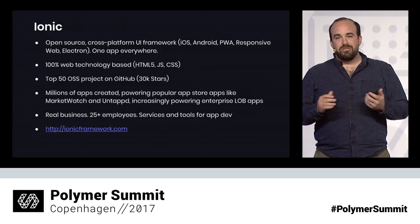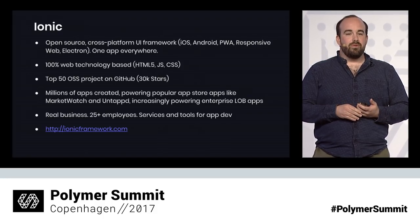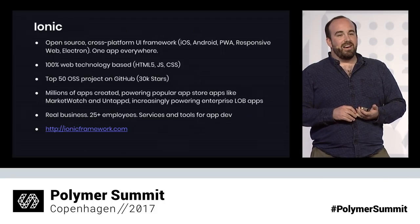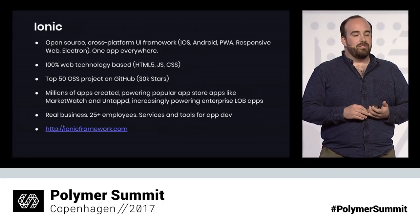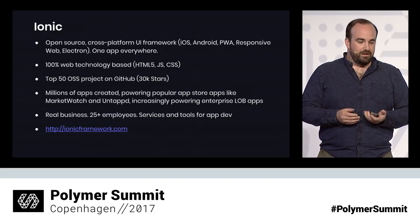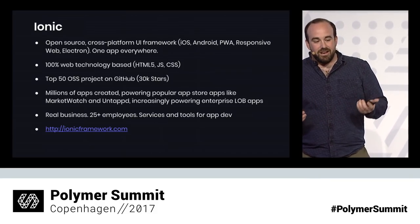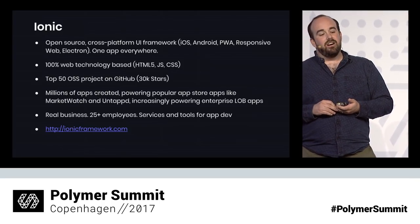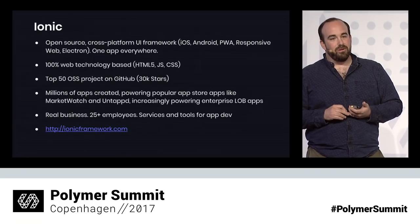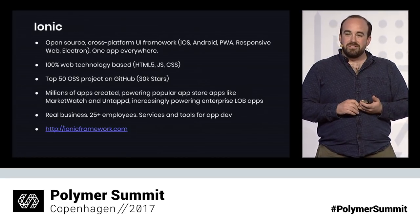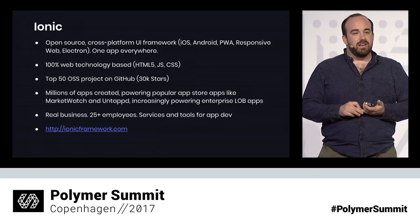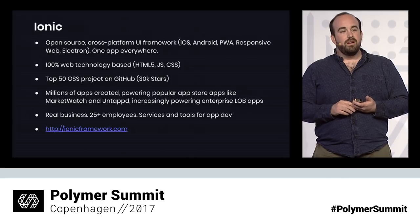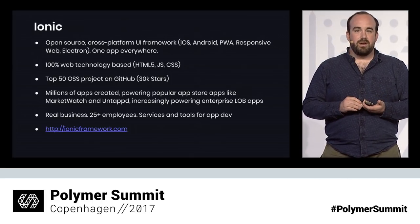One thing people really like about a web approach is it's just really easy to customize. CSS and HTML is one of the easiest things to style, and we're proud that we're based 100% on web technology. Ionic is one of the top open source projects on GitHub, and we've had millions of apps created. Some you might use, like Dow Jones Market Watch and Untappd, a social network for people who like to drink beer. And big enterprise companies are starting to build a lot of apps internally, and Ionic is powering many of these.